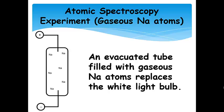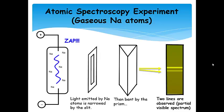Now atomic spectroscopy involves replacing that white light with evacuated tubes containing atoms of various elements. In this case, we have replaced our white light with an evacuated tube filled with sodium atoms. These replace the white light bulb. These sodium atoms are just hanging out in there, and we're going to zap them.